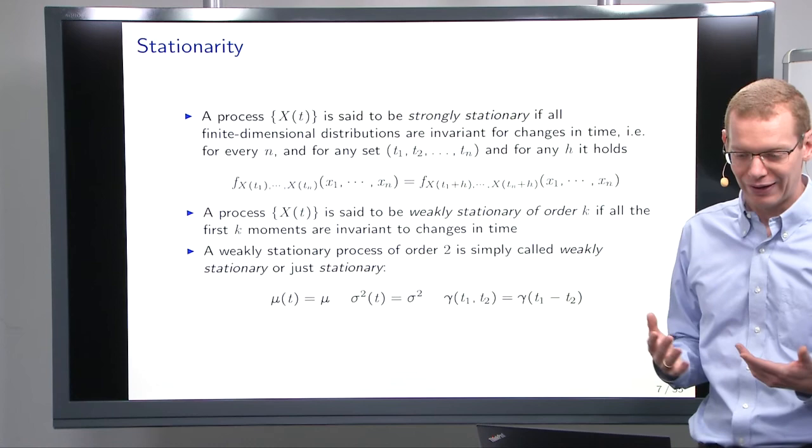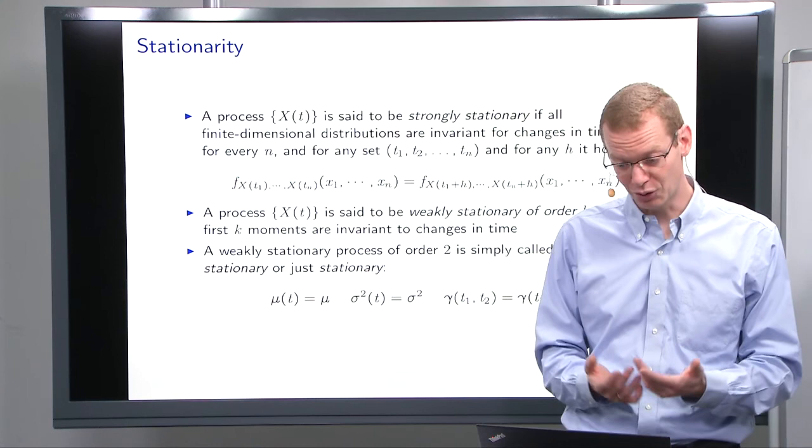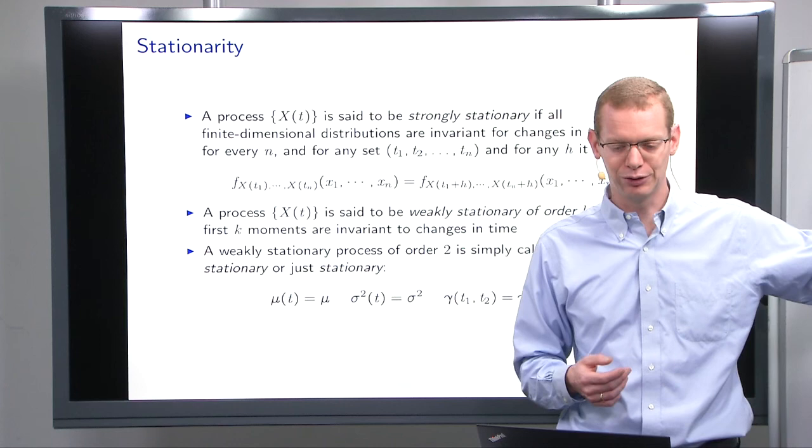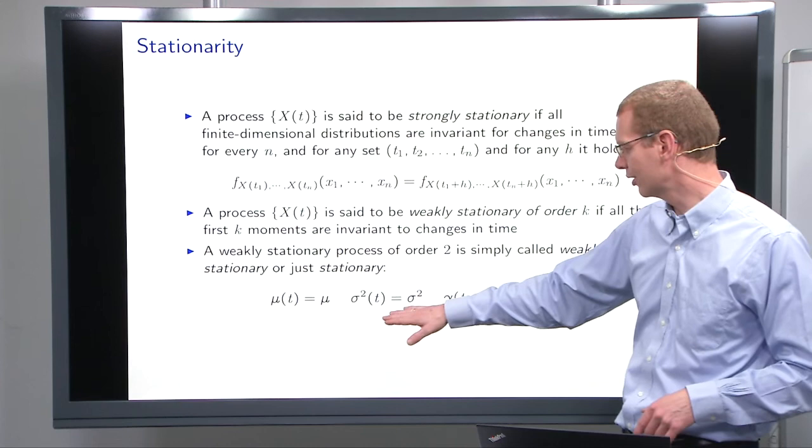Often what we will deal with is so-called weakly stationary of a particular order, k. Now, what that holds is that the first k moments have to be invariant to changes over time. So invariant of order one, of weakly stationary order one, means that the mean value is stationary, is fixed, constant, and independent of changes in time.